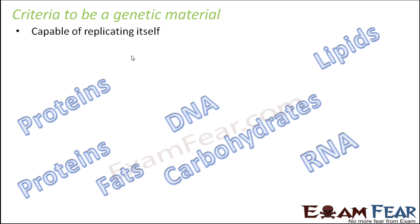First of all, a genetic material should be capable of replicating itself. Replicating means to create a copy of itself. These genetic materials actually do a job during the process of cell division. When a cell is dividing to form two new cells, you have to provide the genetic material to the new cells — only then will they have the traits inherited from their parents.